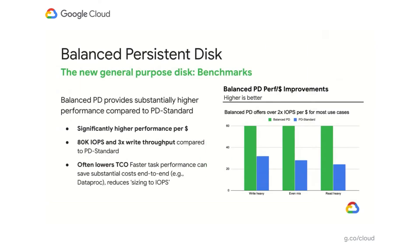With 6 IOPS per gigabyte and a maximum of 80,000 sustained IOPS, it offers significantly higher performance and more performance per dollar. Whether write-heavy, read-heavy, or in-between, Balanced PD offers 2 times the IOPS per dollar for most use cases or better. This means that despite the higher cost per gigabyte, for many workloads Balanced PD can actually lead to improved TCO when you take into account the impact of faster performance at the workload level end-to-end. This can express itself in cost savings from faster task completion, for example reduced data proc costs, or in the reduced need to size to IOPS rather than pure capacity.